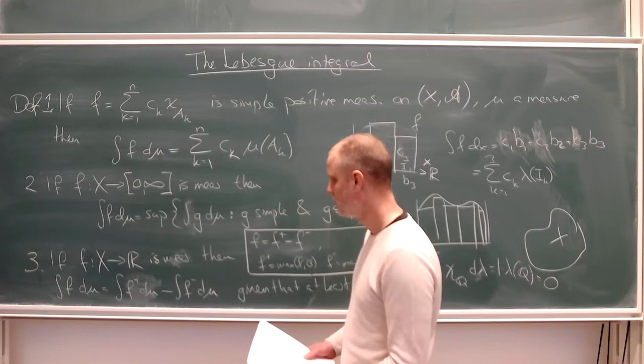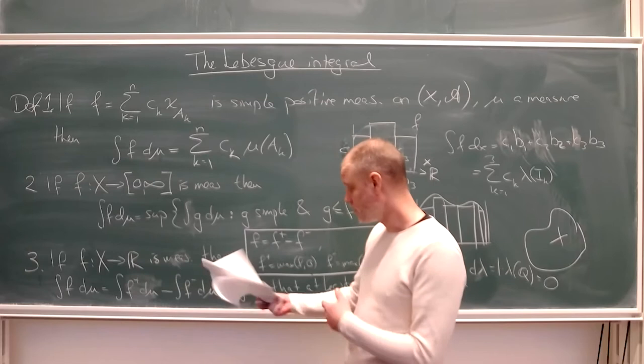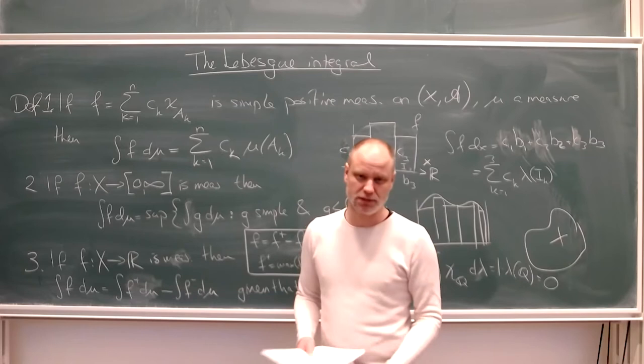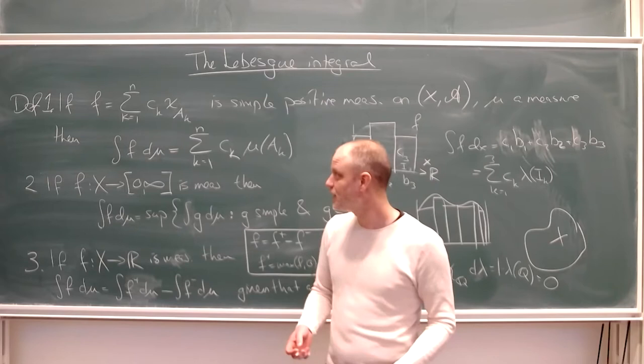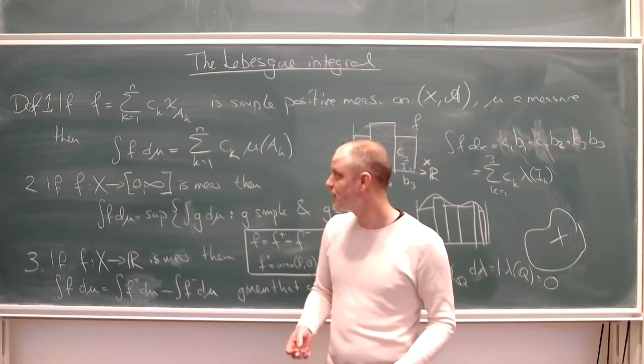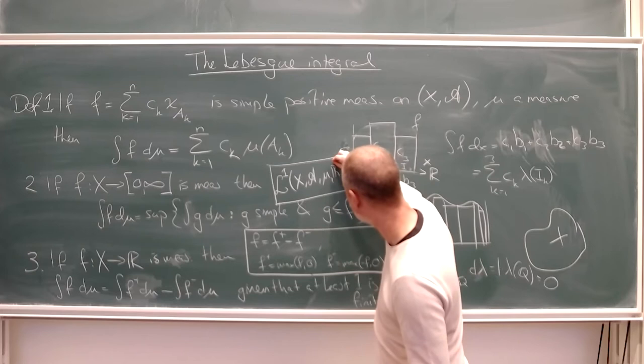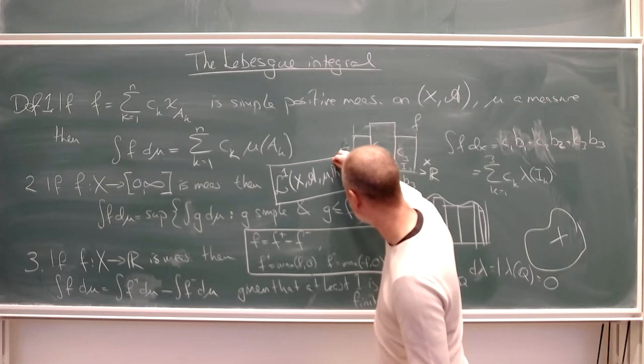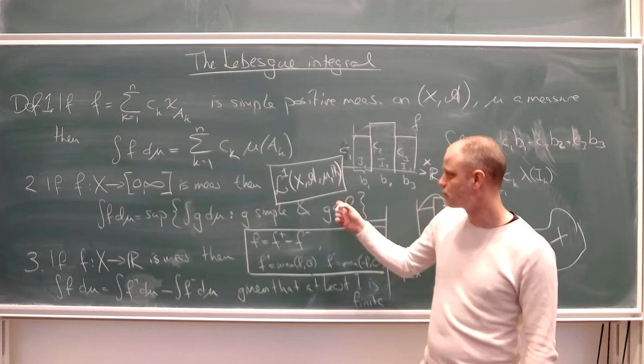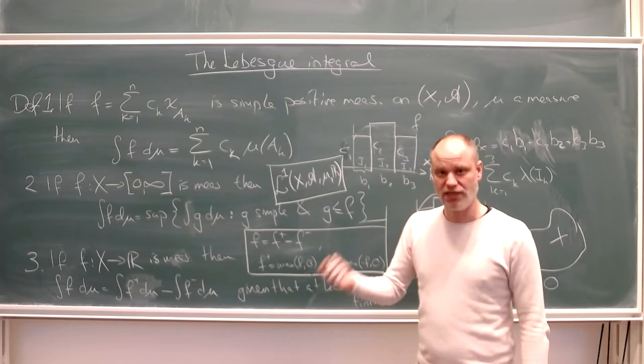The set of integrable functions forms a vector space — actually a normed space — and has its own notation: L1(X, A, mu), sometimes with R appended because we could have complex-valued functions. This is the space of all functions which are integrable, meaning both the integral of f-plus and f-minus are finite.